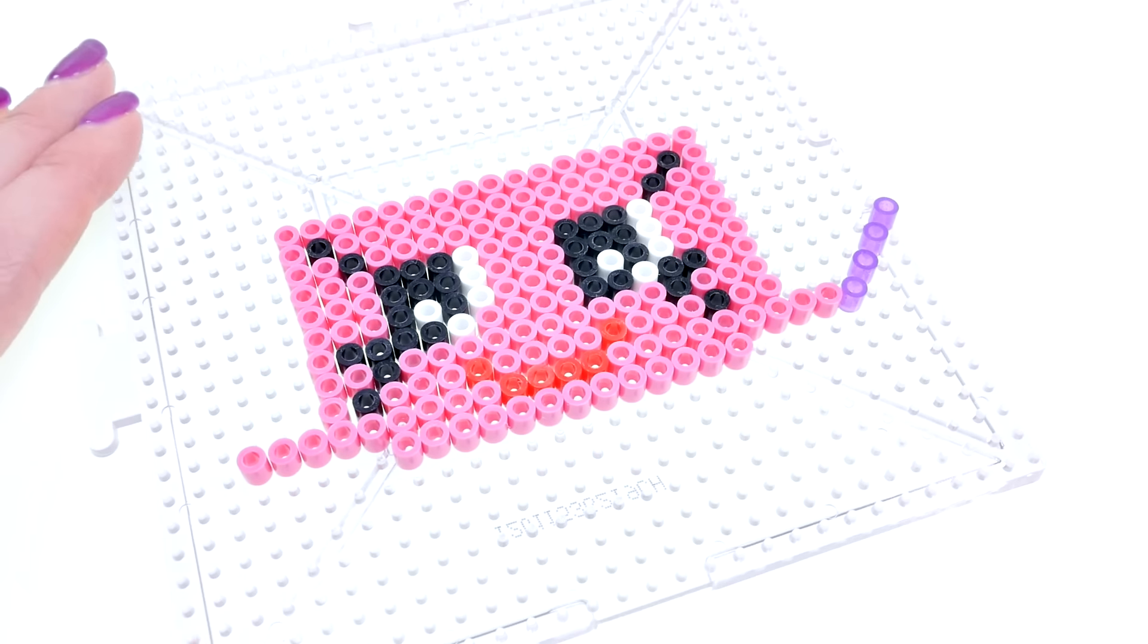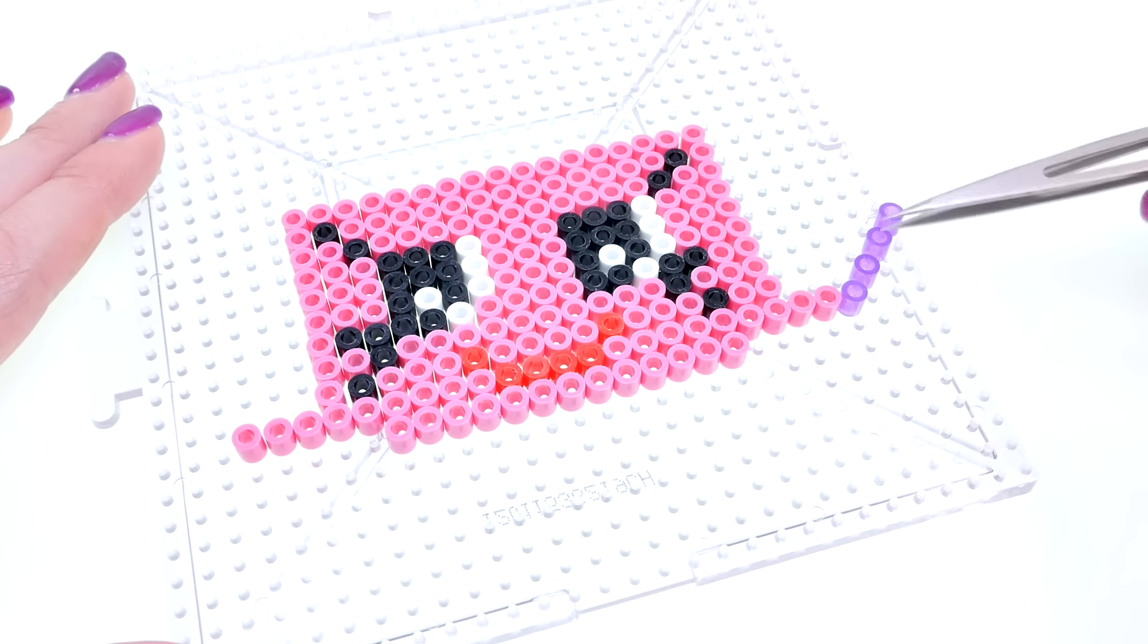Now it is all filled in with pink and I made two little pink arms and the purple wand or chopsticks that she's holding.